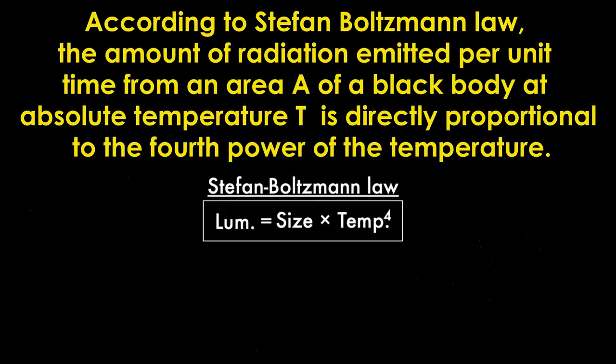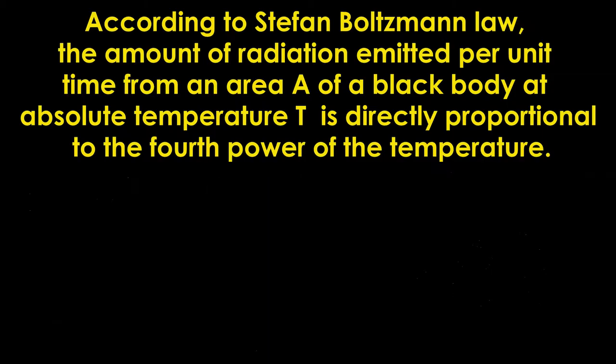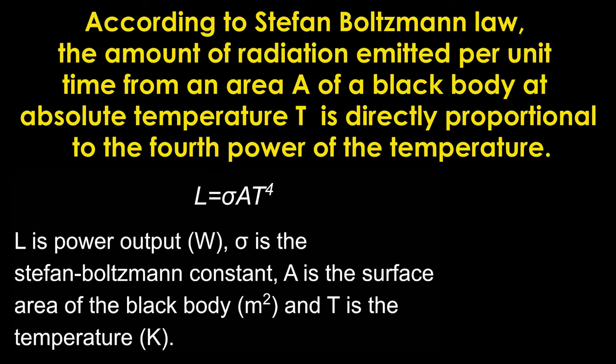Here is the simple presentation of Stefan-Boltzmann law. Mathematically, the luminosity according to Stefan-Boltzmann law is the product of the Stefan constant times the area of the black body times temperature to the fourth power.